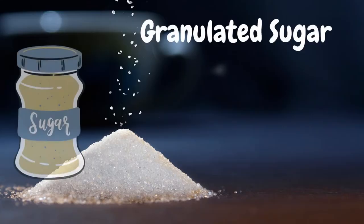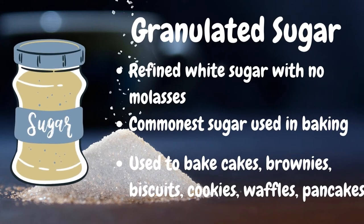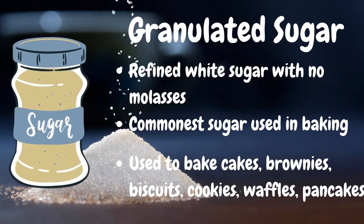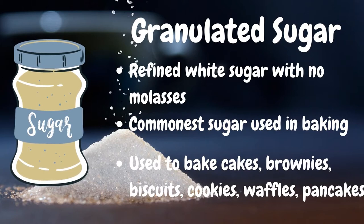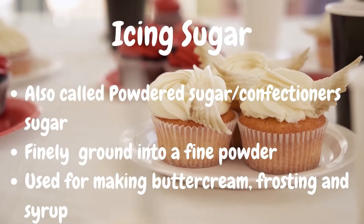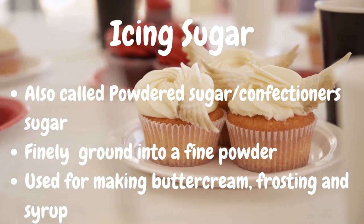First off, we're going to start with a baker's staple: granulated sugar. Every baker should have a bag of this at home. It's a refined sugar and it's very common. We use it for baking everything from cakes to brownies, waffles, pancakes — you name it, that's what it's used for.